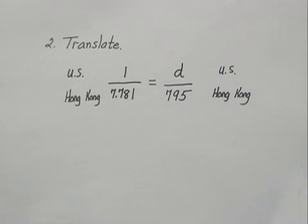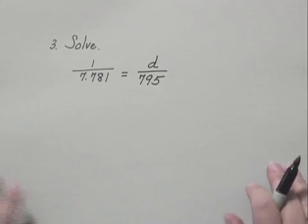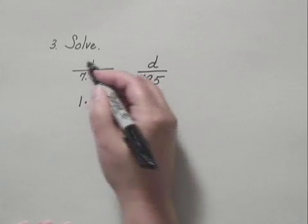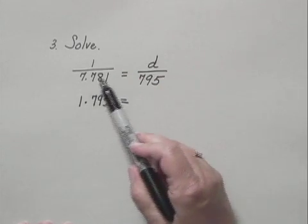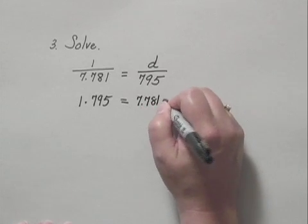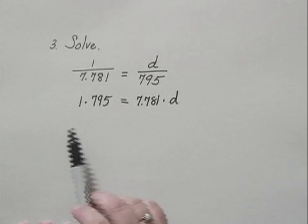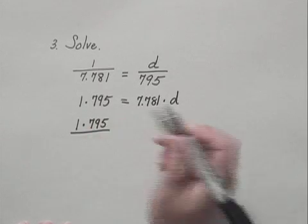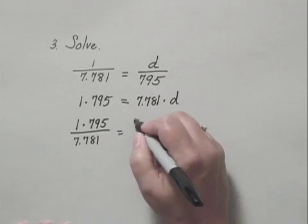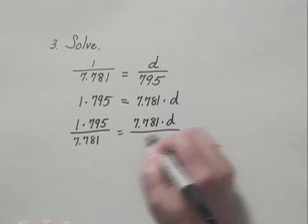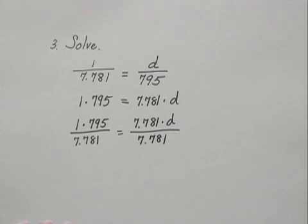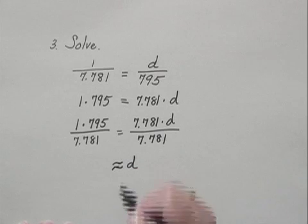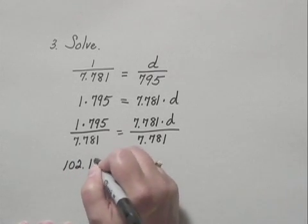We have a proportion to solve in step three. Equating cross products: 1 times 795 equals 7.781 times D. To solve, we divide both sides by 7.781: 795 over 7.781 equals D. Rounding to the nearest hundredth, D is approximately 102.17.